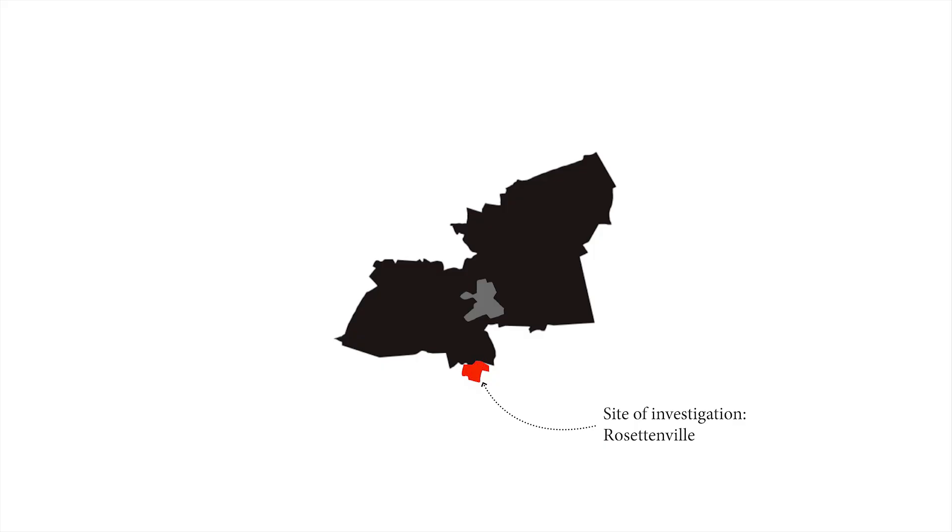Rosettenville sits closer to the city center but still exists south of Johannesburg. It was a predominantly Portuguese suburb constructed with bungalow typologies that housed the community. The bungalow itself was an architectural typology originally from Bangladesh. After it was colonized by the British, the typology was taken and reinterpreted for its South African use.